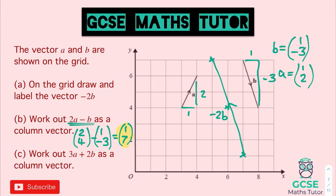For the final question, we've got 3A plus 2B. Tripling A gives 3 over 6. Two lots of B gives 2 over minus 6 on the bottom. Adding the tops: 3 and 2 makes 5. And 6 add negative 6 — they cancel each other out — so that's 0 on the bottom. Our final vector is 5 over 0.